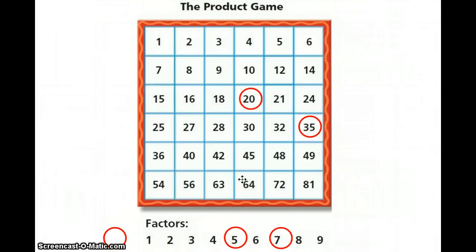And then you keep going until somebody gets 4 in a row. So I hope this helps you to understand how to find multiples and one use for them. Good luck when you and your partner play the product game.